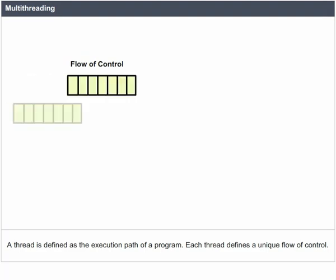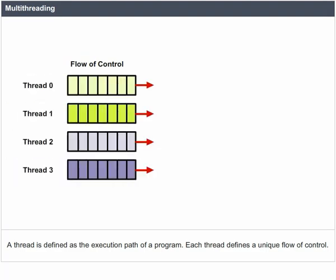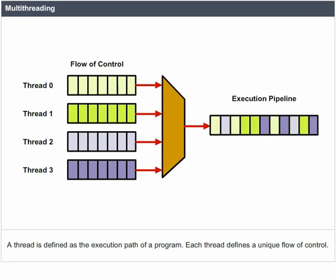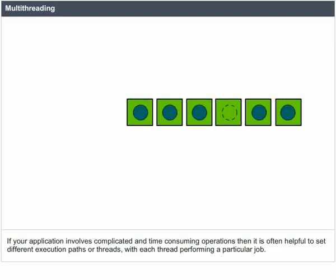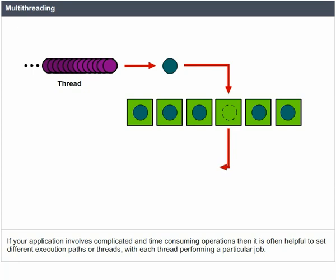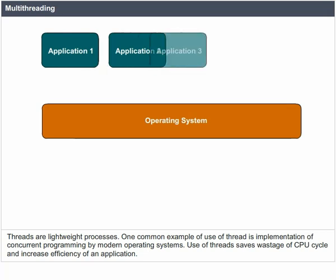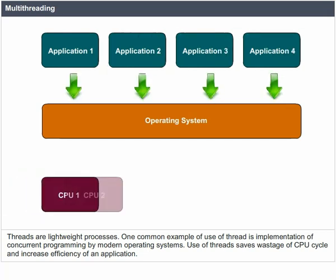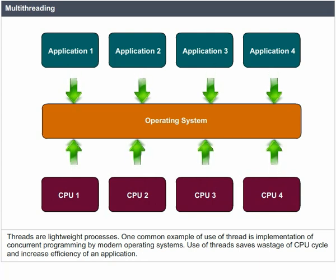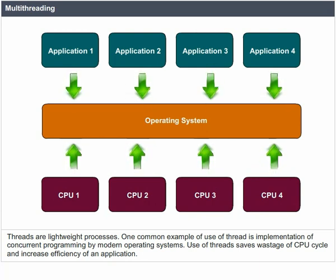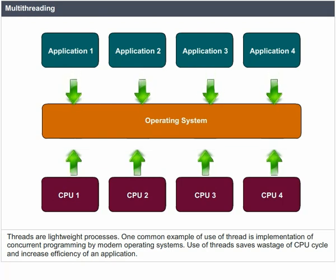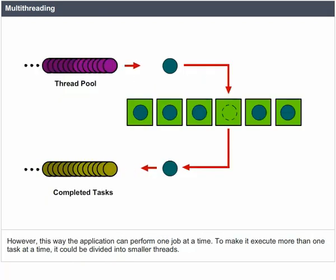Multithreading. A thread is defined as the execution path of a program. Each thread defines a unique flow of control. If your application involves complicated and time-consuming operations, it is often helpful to set different execution paths or threads, with each thread performing a particular job. Threads are lightweight processes. One common example of using threads is the implementation of concurrent programming by modern operating systems. Use of threads saves wastage of CPU cycles and increases the efficiency of an application.